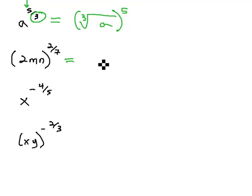Similarly, on this next example, 2mn to the 2 sevenths power, underneath the radical we have the 2mn. The denominator of 7 becomes the index on the radical, and the numerator of 2 stays as an exponent.